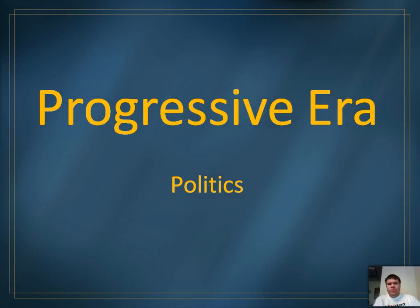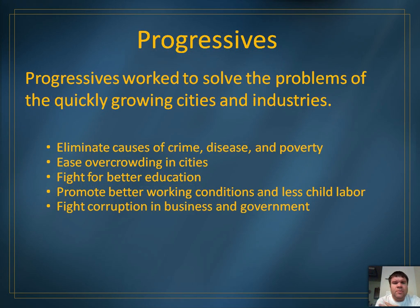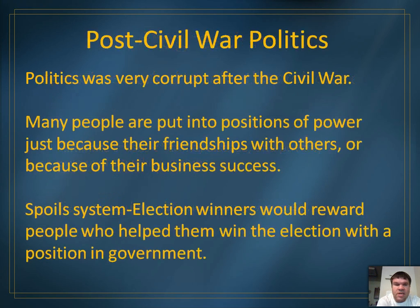Hello everybody, we're back again to talk about the progressive era, and this time we're going to be talking about politics or political corruption. You have a couple learning targets for today: one is that you can describe the corruption in politics through the early 1900s, and that you can describe the differences in policies between Presidents Roosevelt, Taft, and Wilson. Progressives were people who worked to solve the problems of the quickly growing cities and industries, and one of the areas they worked on was fighting corruption in business and in government.